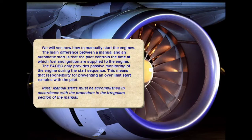We will now see how to manually start the engines. The main difference between a manual and an automatic start is that the pilot controls the time at which fuel and ignition are supplied to the engine. The full authority digital engine control only provides passive monitoring of the engine during the start sequence. This means that responsibility for preventing an over-limit start remains with the pilot. Note: manual starts must be accomplished in accordance with the procedure in the irregular section of the manual.